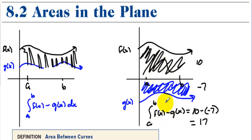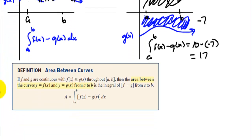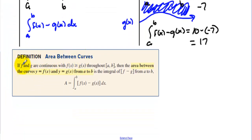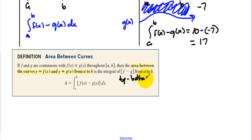No matter where the functions are, as long as you do the top function minus the bottom function, you'll get the right answer. Area between curves: if f and g are continuous with f(x) always above g(x) throughout [a, b], then the area between the curves y = f(x) and y = g(x) from a to b is the integral of f minus g — in other words, the integral from a to b of always top minus bottom.